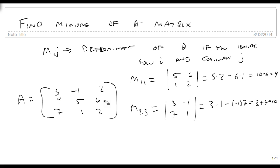And the last minor that I want to look for is M₃₂, and I could find any of the minors that I wanted, but 3, 2 is third row, second column, so this is 3, 2, 4, 6, which is 3 times 6 minus 4 times 2, which is 18 minus 8, which is 10. And I have now successfully found my minors.